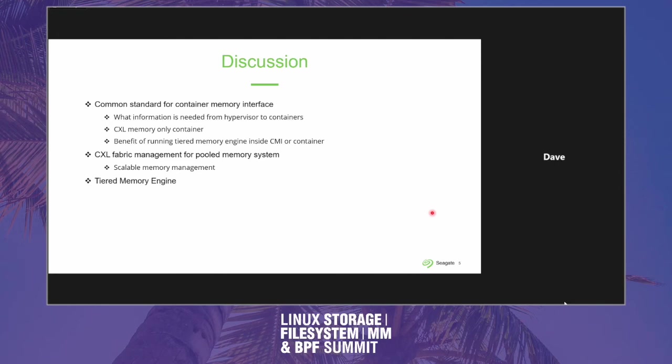A really write-heavy workload versus a really read-heavy workload might have different preferences about which NUMA nodes to fall back to — the write-heavy workload wants to stay away from media with really slow write performance. Right now, user space has to figure out what to do and map a new NUMA policy themselves. There's currently no kernel implementation that uses any of this information to do anything smart. There's a lot of data we're not consuming in the kernel — a lot of options we're leaving on the table.